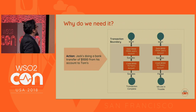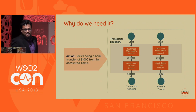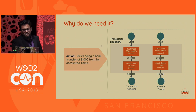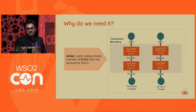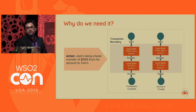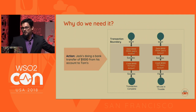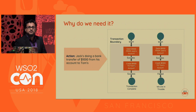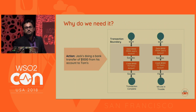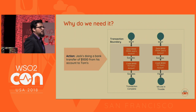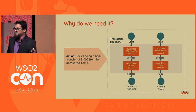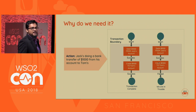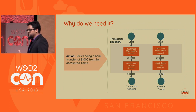Why do we need it? Let's say we look at this particular transaction boundary — we are trying to transfer $1,000 from Jack's account to Tom's account. In the happy-day scenario, we start the transaction, debit from one account resulting in a data write to some database, then credit that amount to Tom's account. If both succeed the transaction is fine, but if one of these fails we need to abort the entire transaction. With XA data sources running in a single process, managing such a transaction becomes much easier.